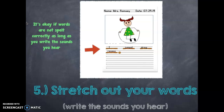If I am in first grade and I'm not sure how to spell jumped, I can stretch out the word and write the sounds that I hear. So let's go ahead and do that together: J, U, M, P, D. Now jumped actually ends with E-D, but when I was stretching it out I didn't hear that sound. And since I wasn't sure how to spell it, I'm just going to write the sounds that I hear.